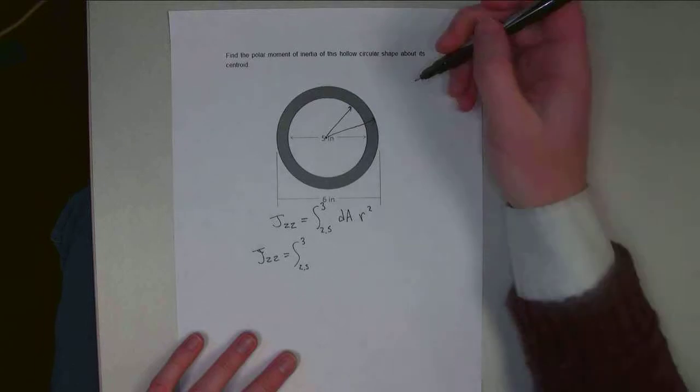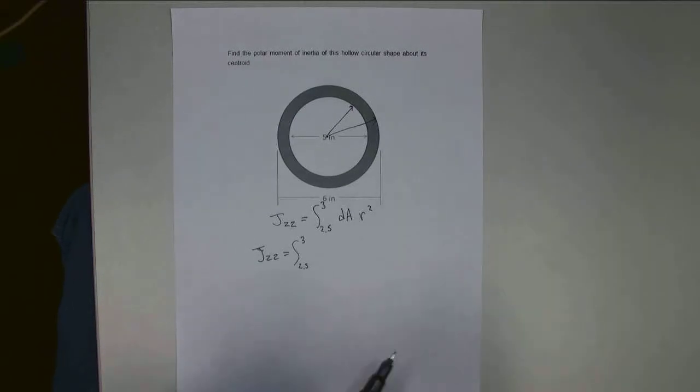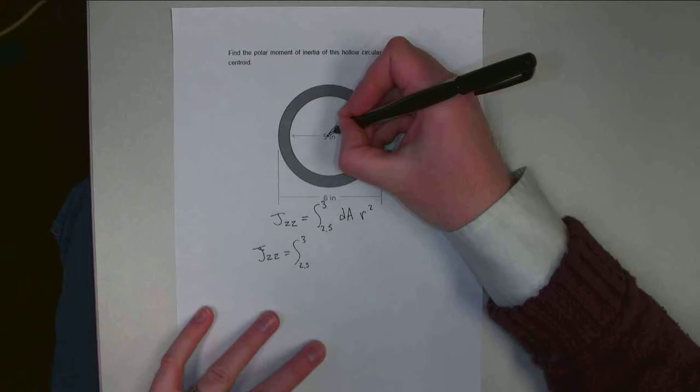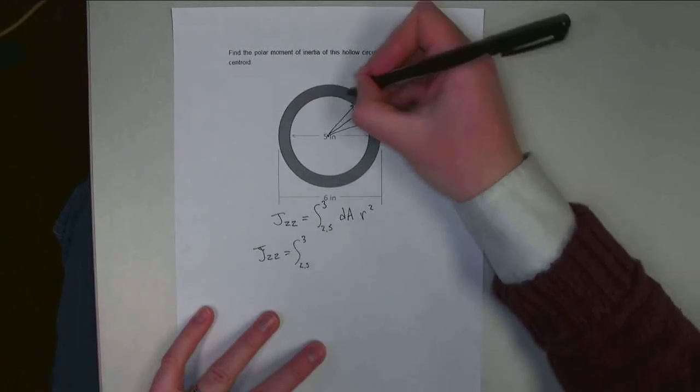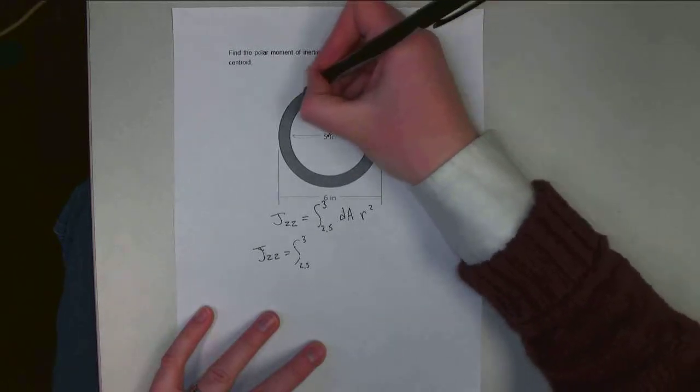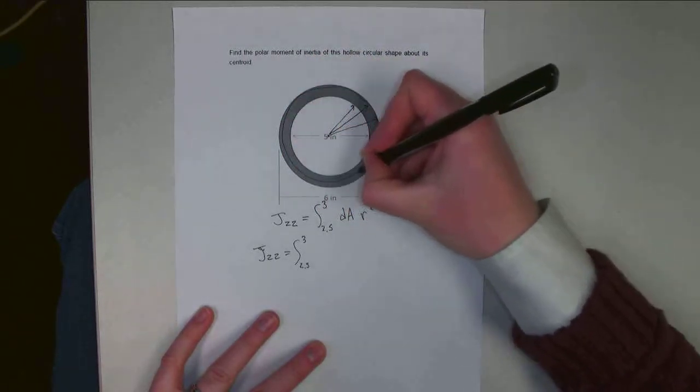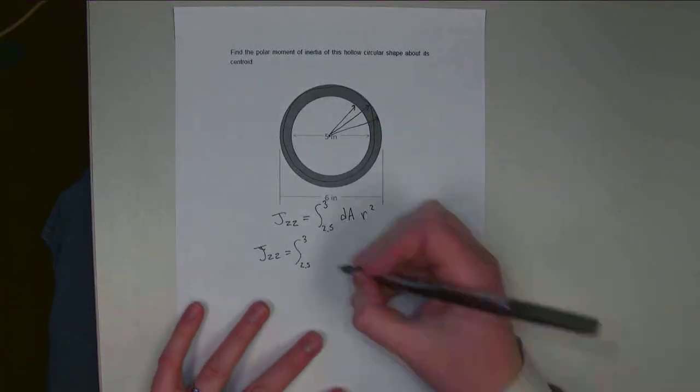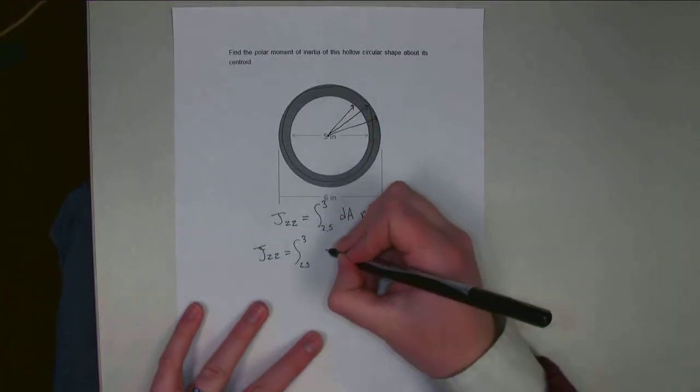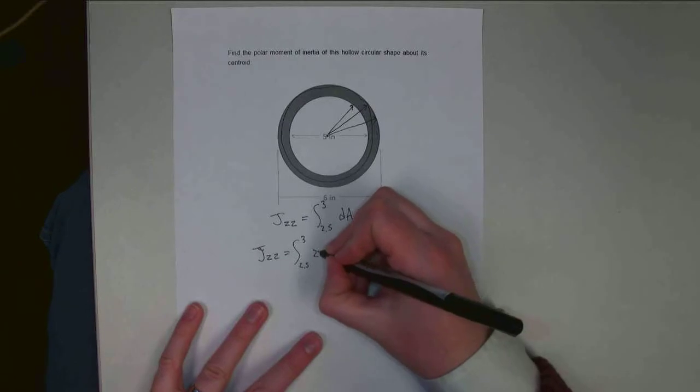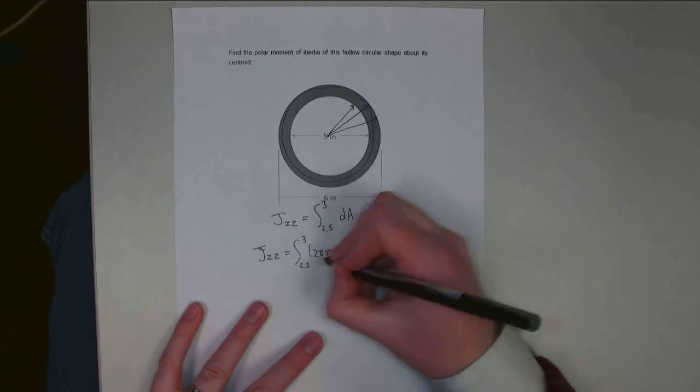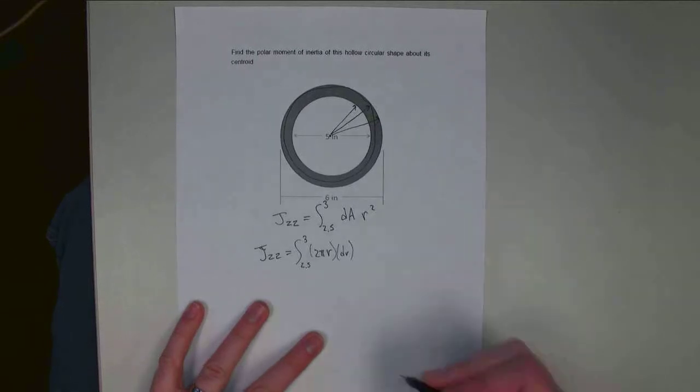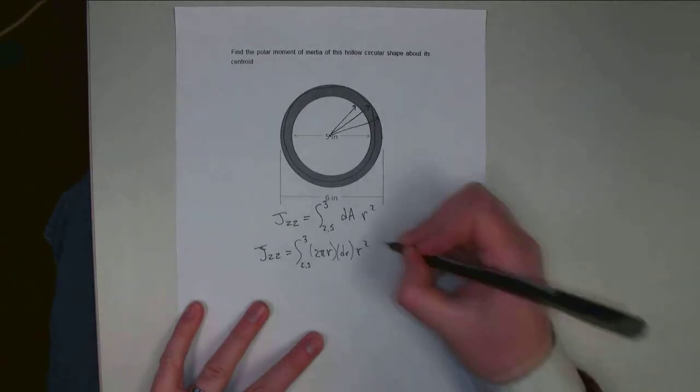And dA is going to be the rate at which the area changes as they increase r, and so that is going to be, at any value r, it's going to be the circumference here times the rate at which r is changing. So the circumference of a circle is going to be 2πr times dr, and I still have this r squared term that's left in my integral.